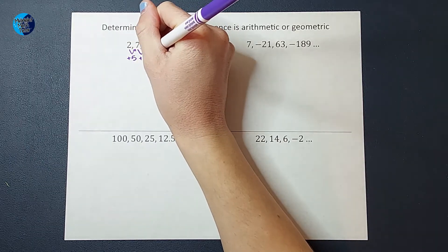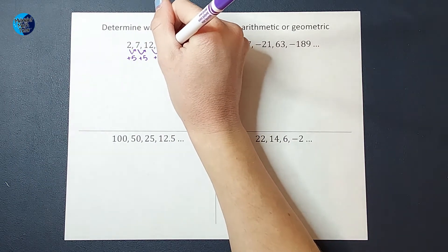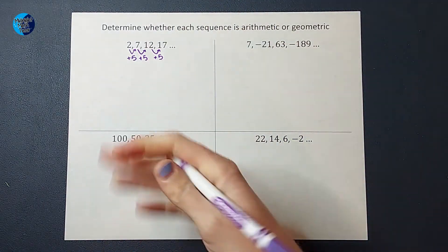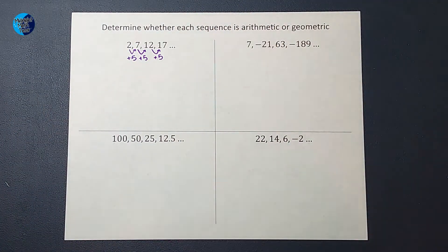Two plus five is seven, seven plus five is 12, 12 plus five is 17 and this dot dot dot signifies it keeps going. I could keep adding five to make that sequence bigger and bigger. So great, we figured that out.